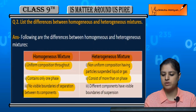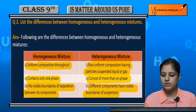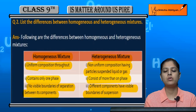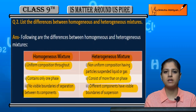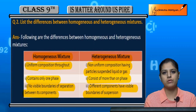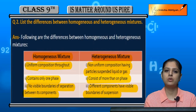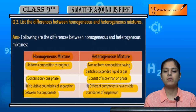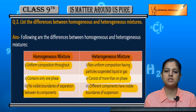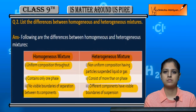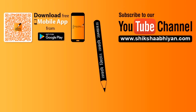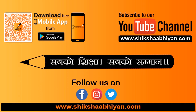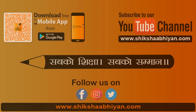In a heterogeneous mixture, different components have visible boundaries of suspension. The insoluble particles are easily visible in the solvent, and you can easily differentiate and separate the solute from the solvent. These were some of the key differences between homogeneous and heterogeneous mixtures.